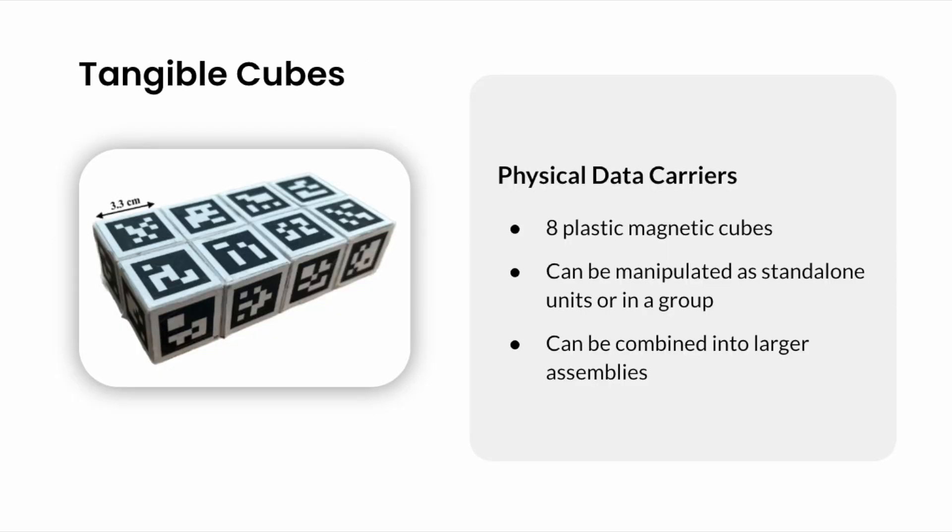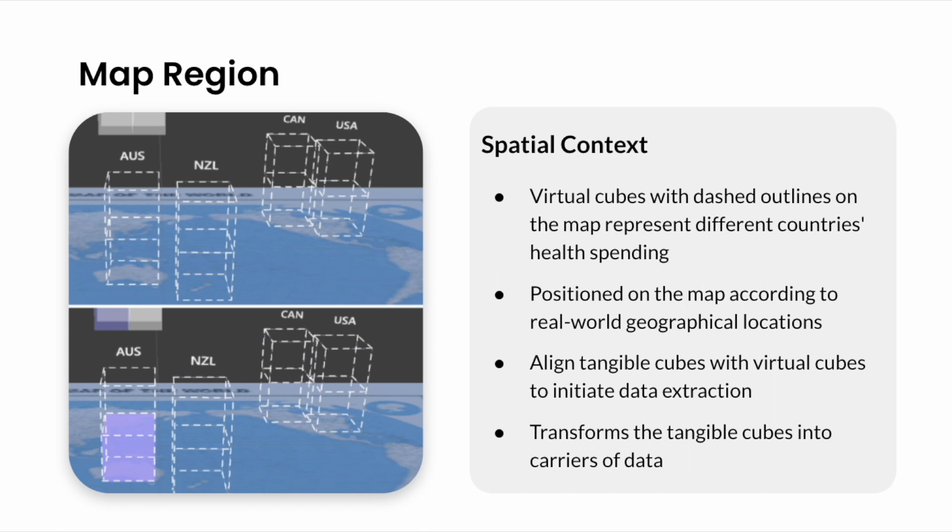We used a set of eight plastic cubes, each with an edge length of 3.3 centimeters and weight of approximately 15 grams. These cubes can be manipulated either individually or collectively as a group. The map region provides a spatial context for a dataset. As users engage with the system, they encounter virtual cubes with dashed outlines that represent national health-spending data. These cubes are positioned to mirror their real-world geographical locations. When users align the tangible cubes with their virtual counterparts, a connection is established and the data represented within the virtual cubes are embodied in the tangible cubes.